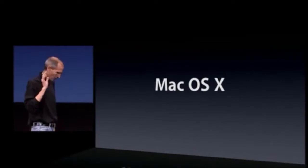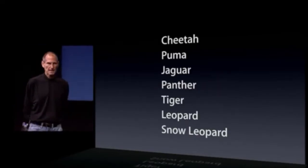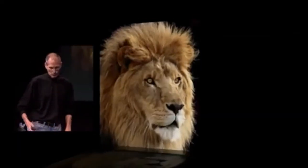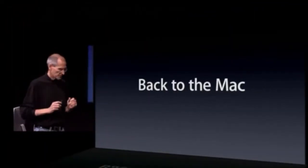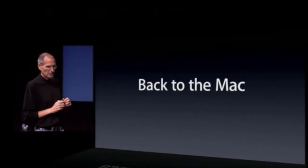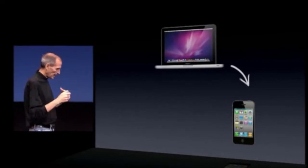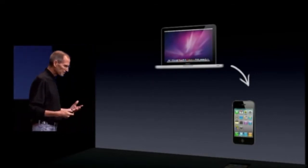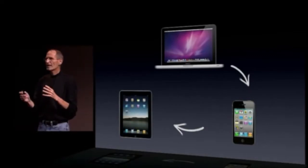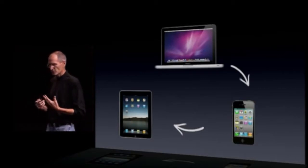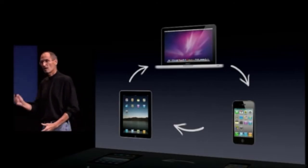We want to give you a sneak peek at where we're going with Mac OS X. Today we're going to give you a preview of the eighth major version of Mac OS X, and we call it Lion. The big idea is where 'Back to the Mac' comes from. We started with Mac OS X, created from it a version called iOS, invented new things, perfected it over the last several years, and now we'd like to bring those innovations back to the Mac. That's what Lion is about.